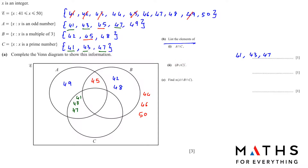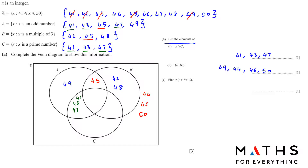Looking at B union C: the elements in B union C are all elements in either B or C. What is NOT in B union C? Those are 49, 44, 46, and 50. For part C, find N of A intersection B intersection C. N means the number of elements. A intersection B intersection C is the middle part of the Venn diagram, which is empty, so the answer is zero.